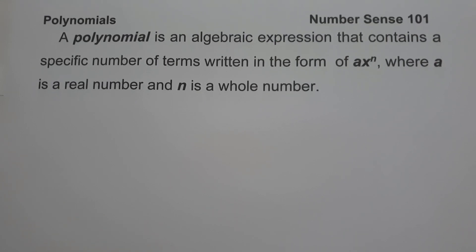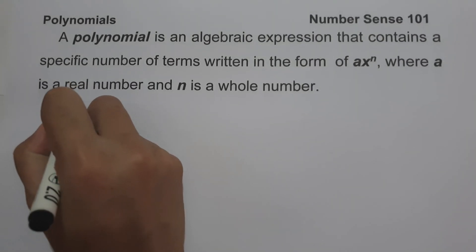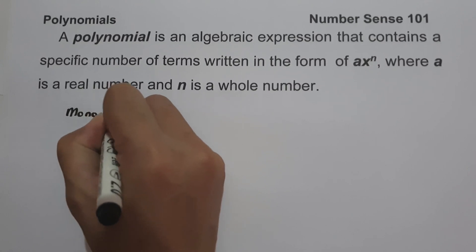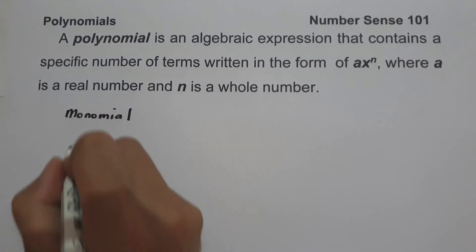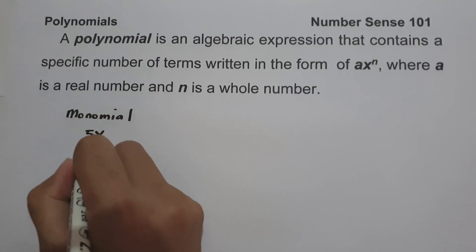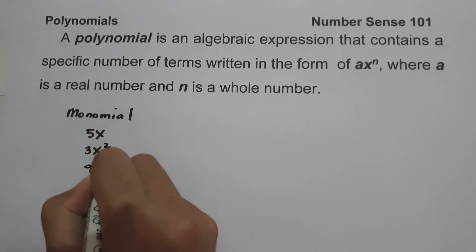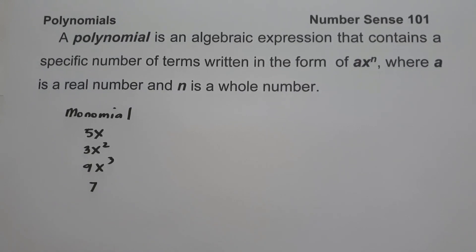There are different kinds of polynomials. A polynomial with one term is called a monomial. Examples of monomials are 5x, 3x squared, 9x cubed, and 7. So those are examples of a monomial.